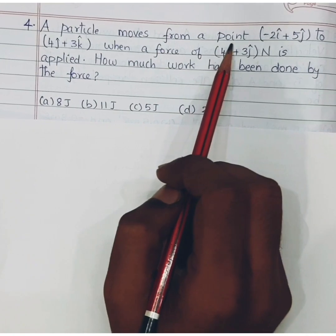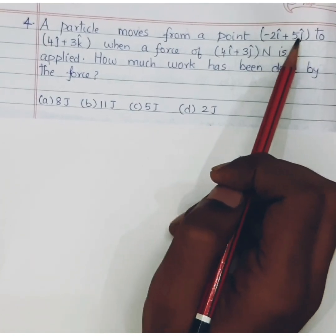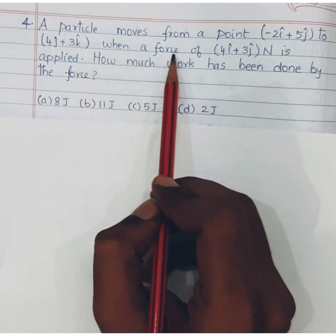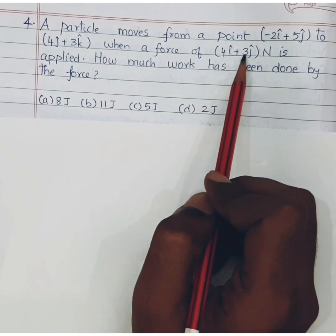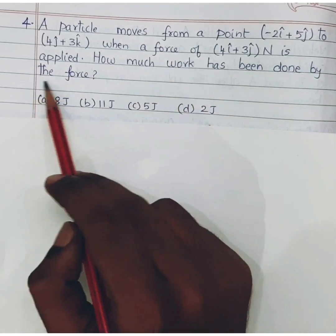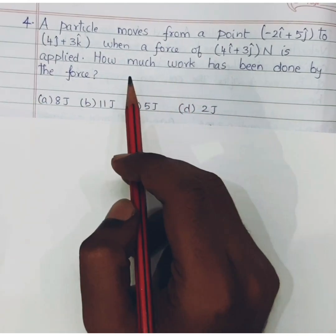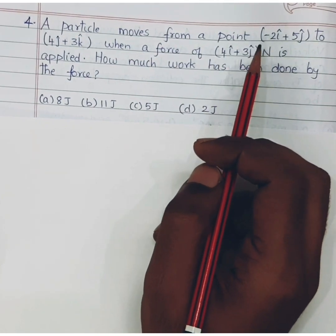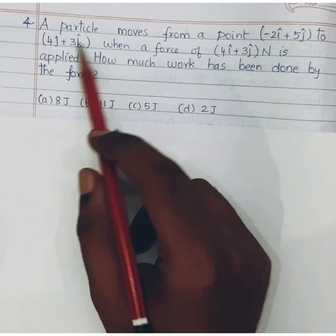A particle moves from a point minus 2i cap plus 5j cap to 4j cap plus 3k cap when a force of 4i cap plus 3j cap newton is applied. How much work has been done by the force? So we know that work done is nothing but force into displacement.